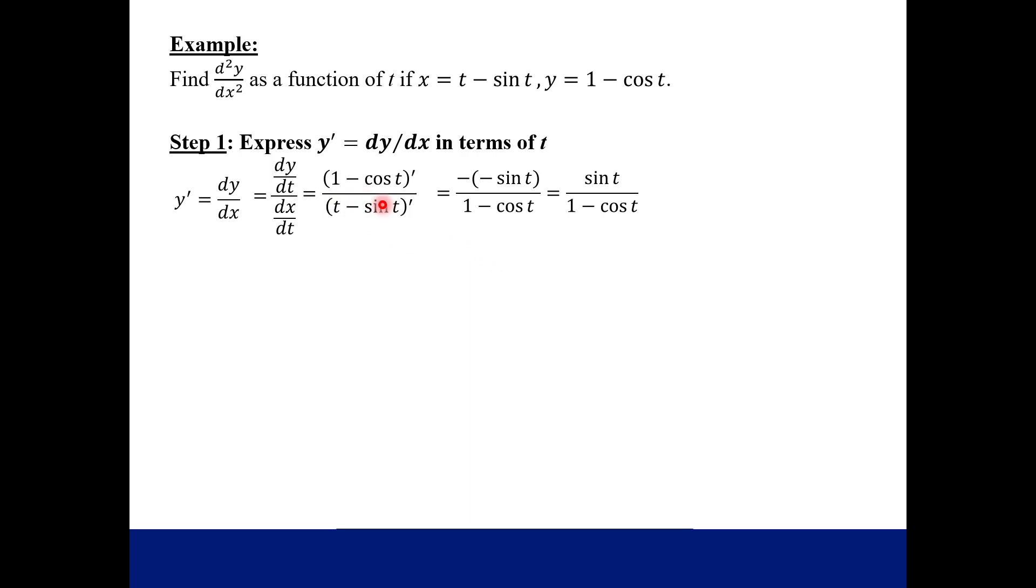So we're going to calculate each of those derivatives using what we know about trig functions. So on top, derivative of one is zero, so that's gone. Derivative of cosine is negative sine, so the negative that was already there turns the numerator positive. And then on bottom, the derivative of t was one and the derivative of sine was cosine t. So there's our first derivative, the first derivative in terms of t.